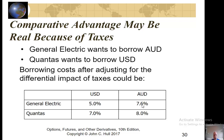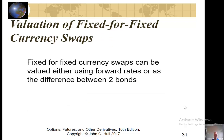Comparative advantage may very well be real in currency swaps because of not only taxes but also currency rules. For example, General Electric wants to borrow in Australian dollars (AUD), and Qantas wants to borrow in US dollars. After adjusting for taxes, GE faces 5% in USD and 7.6% in AUD. Qantas faces 7% in USD and 8% in AUD.